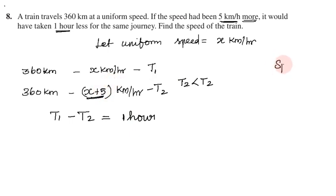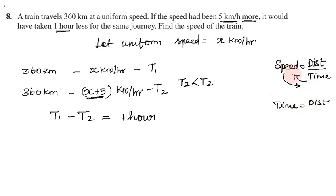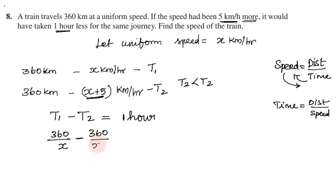The formula for time: in physics, speed is equal to distance divided by time. Therefore, time is equal to distance divided by speed. So T1 is equal to 360 divided by x, and T2 is equal to 360 divided by (x plus 5), and T1 minus T2 is equal to 1.